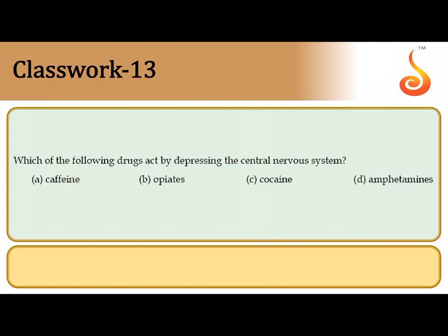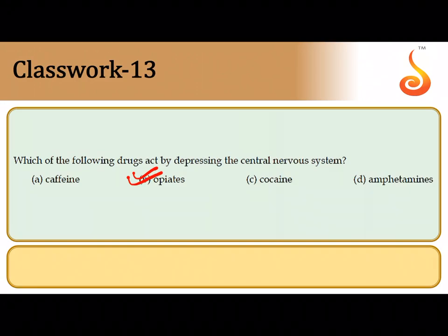The thirteenth question: which of the following drugs acts by depressing the central nervous system? Among all the options, the drug with pain-killing properties that acts as a depressant of the central nervous system is opiates. So the correct answer is option B.